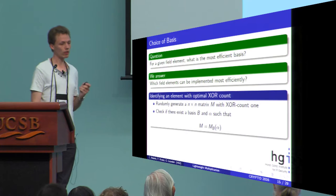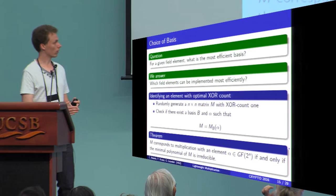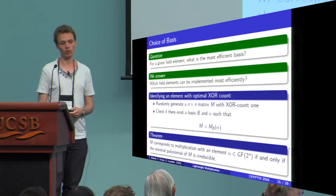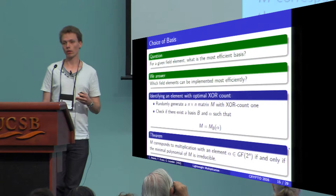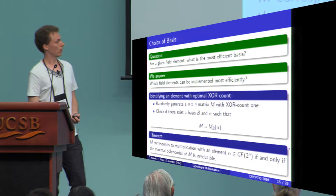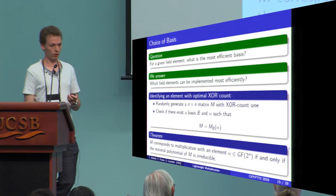How to check this? You can come up with the following theorem that says that a matrix corresponds to an element multiplication if and only if the minimal polynomial of this matrix is irreducible. To remember, the minimal polynomial is the polynomial of least degree such that when you evaluate the polynomial on the matrix then it will evaluate to zero. Now we can check if this condition here is fulfilled.